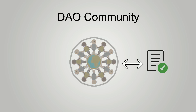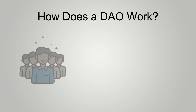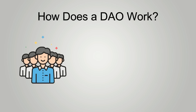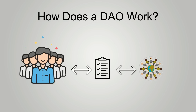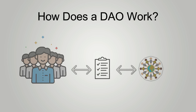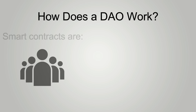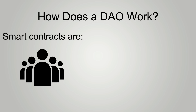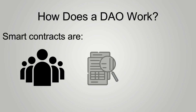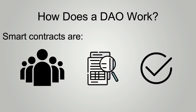How does a DAO work? Members of a DAO establish the rules guiding the community using smart contracts powered by blockchain technology. The smart contracts are public, verifiable, and can be audited, so that potential members have access to all the information they need to understand how the protocol functions.